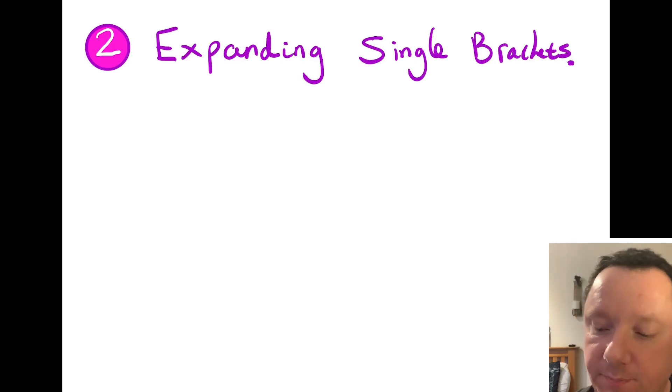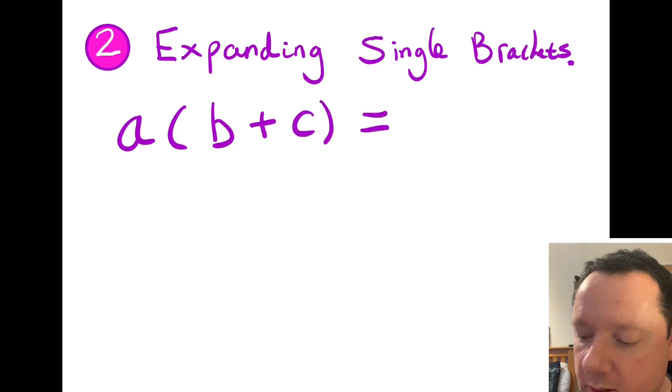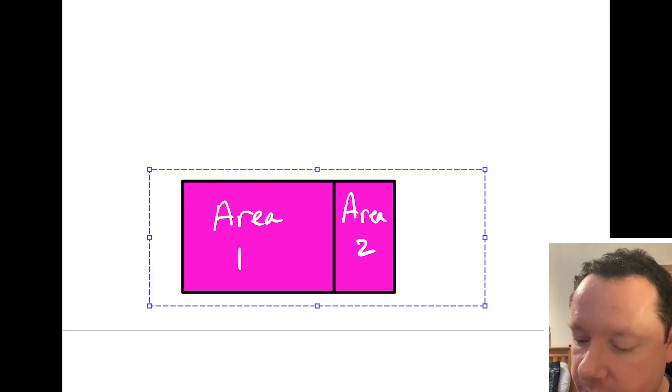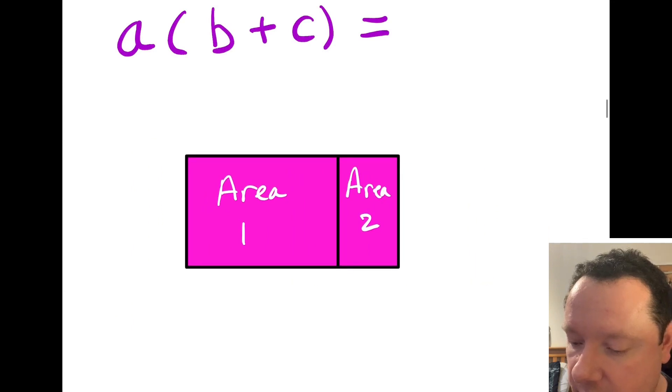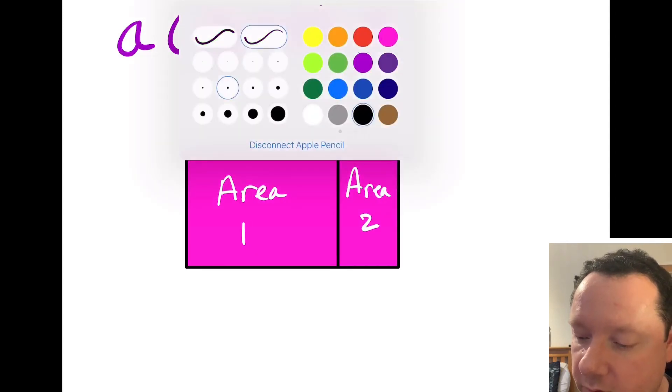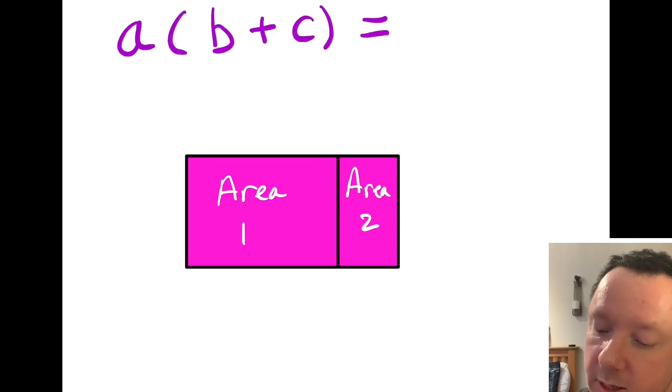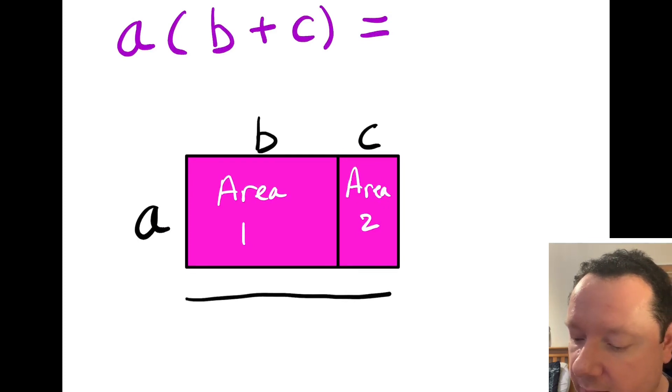Expanding single brackets. So when I say expanding single brackets, what I mean is something like a bracket b plus c. And I want to work out what does that equal when I expand it. Now I can prove something to you to show you where this comes from. So I'm not going to put the answer yet. I'm going to work out the answer using a bit of shape work. So if I take this shape here, I'll just move it up the page a little bit. You'll see I've drawn a rectangle and split it in two places. I've called one area 1 and one area 2. Now if I label this rectangle with some side lengths, but not with numbers, just with algebra. So if I label this side a, then this side would be b and this side would be c. And you should be able to see quite easily that this whole length on the bottom would be b plus c.